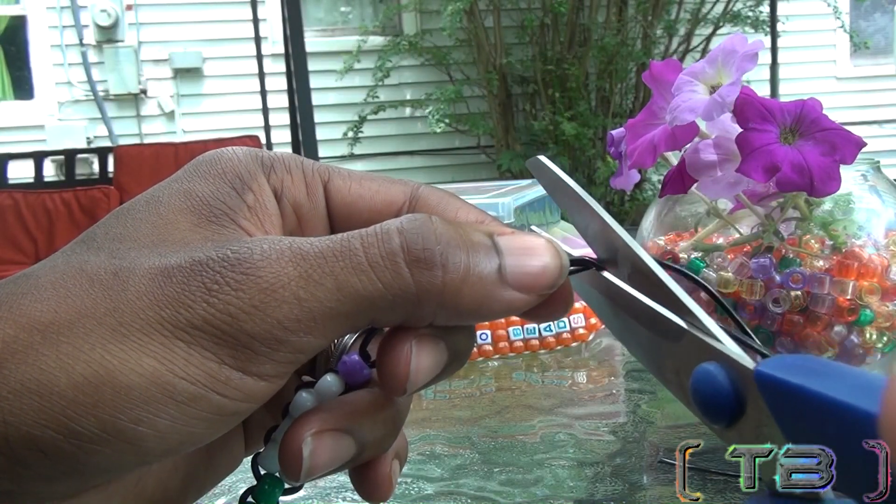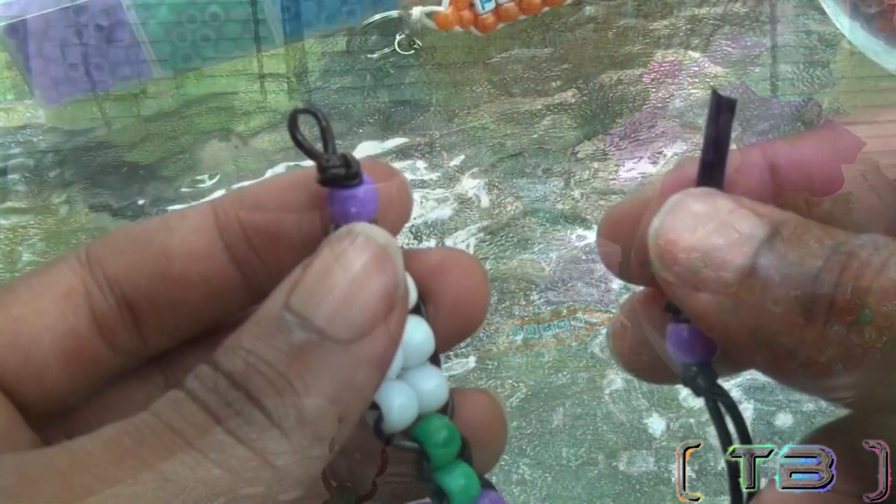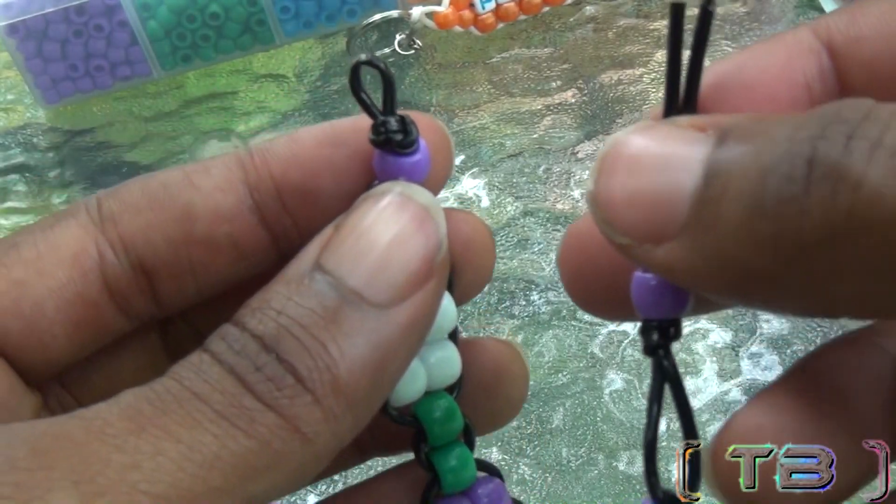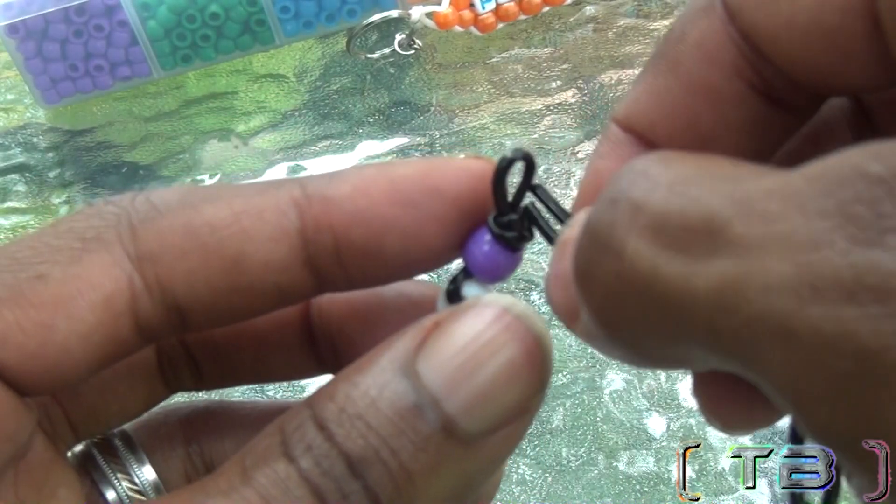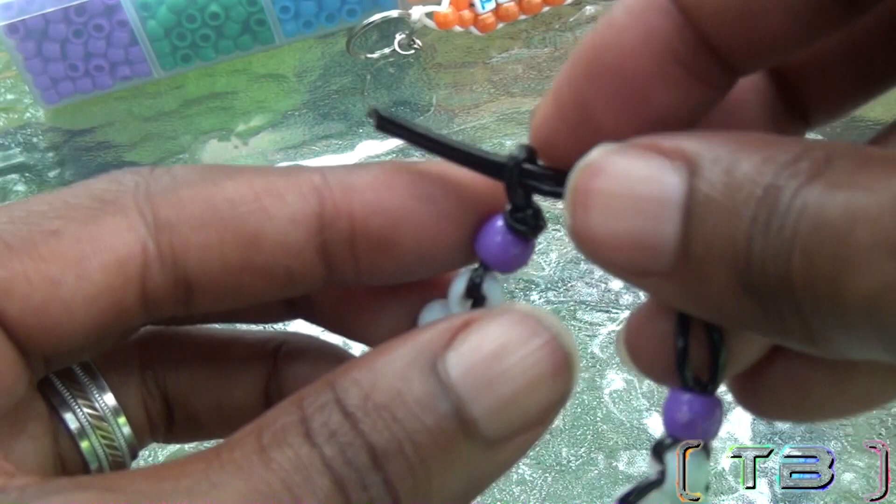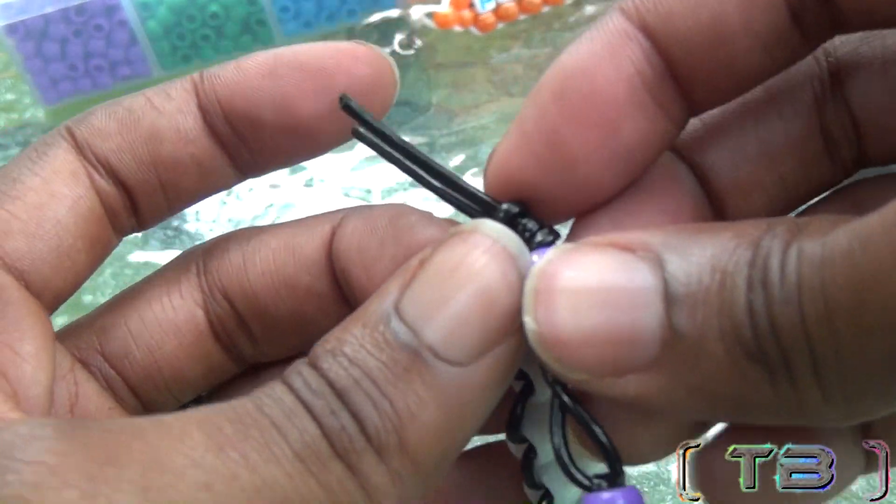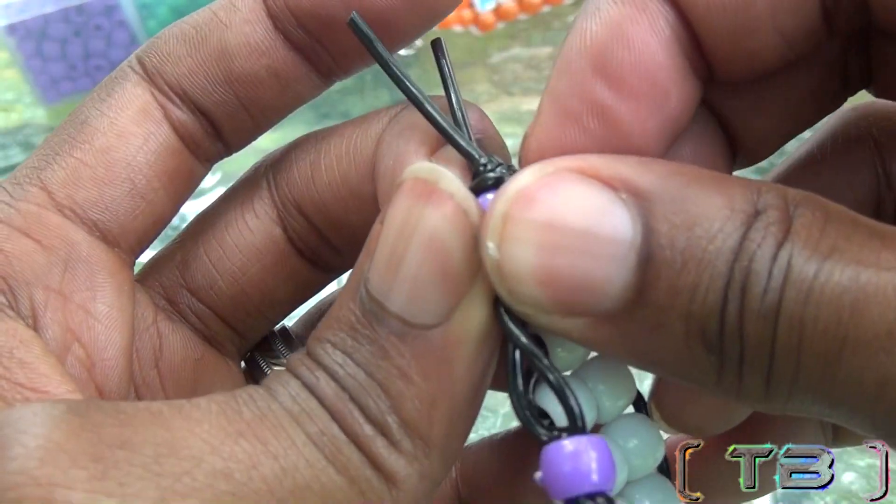Now before cutting off any additional string, be sure to try it on. Putting on the bracelet is turbo easy. You'll take the two ends of string and run those through the loop, squeezing the bead through the loop to lock on the bracelet.